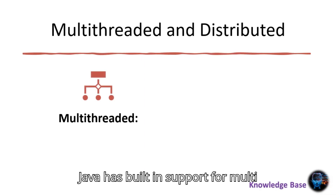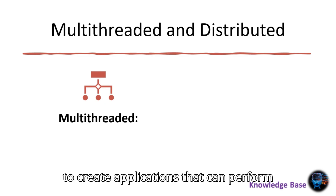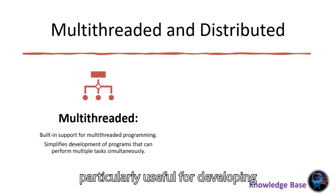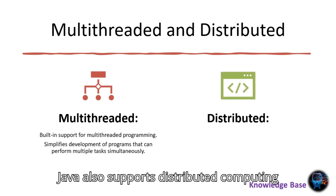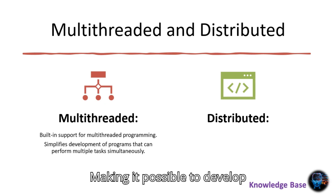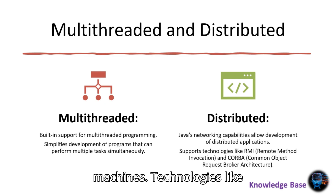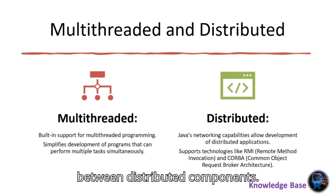Java has built-in support for multi-threaded programming, allowing developers to create applications that can perform multiple tasks simultaneously. This is particularly useful for developing responsive and efficient applications. Java also supports distributed computing through its networking capabilities, making it possible to develop applications that run across multiple machines. Technologies like RMI and CORBA facilitate communication between distributed components.